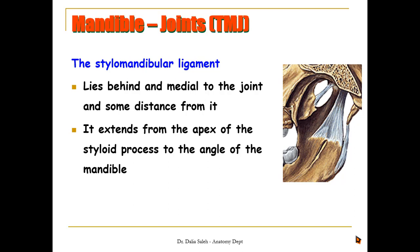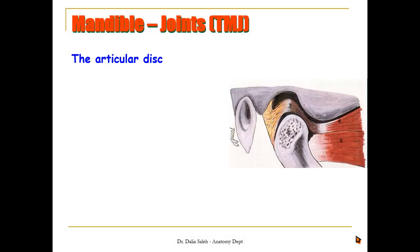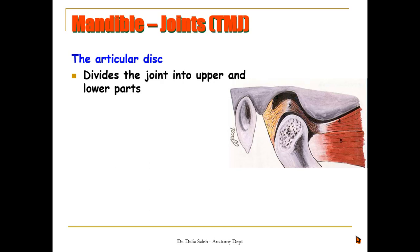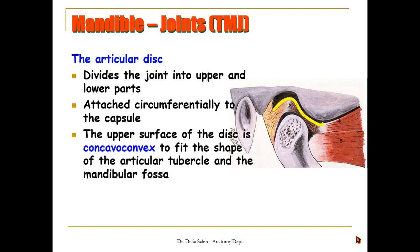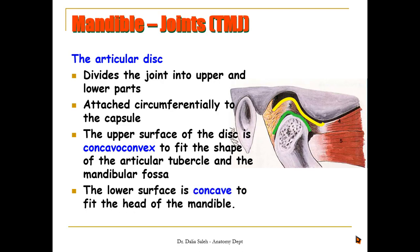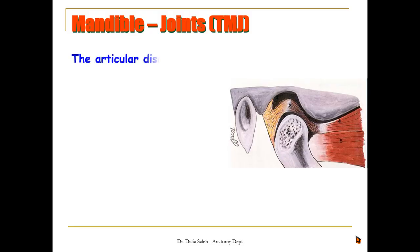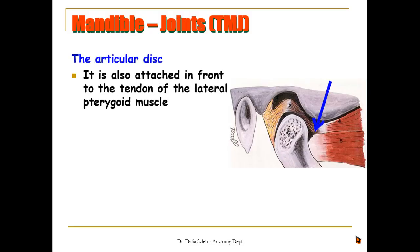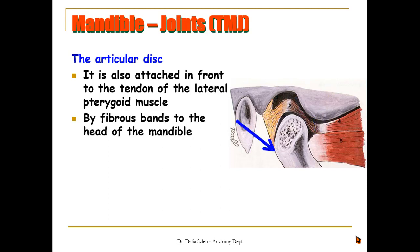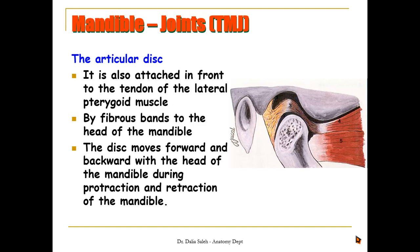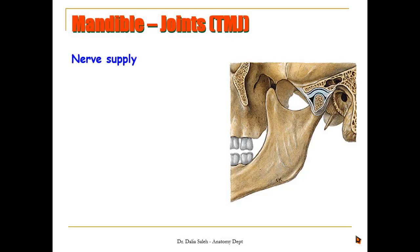We also have the stylomandibular ligament, which lies behind and medial to the joint. It extends from the apex of the styloid process to the angle of the mandible. The articular disc divides the joint into upper and lower parts and is attached circumferentially to the capsule of the TMJ. Its upper surface is concave-convex to fit the shape of the articular tubercle and mandibular fossa, while its lower surface is concave to fit the head of the mandible. The disc is attached anteriorly to the insertion of the lateral pterygoid muscle and posteriorly to the head of the mandible.